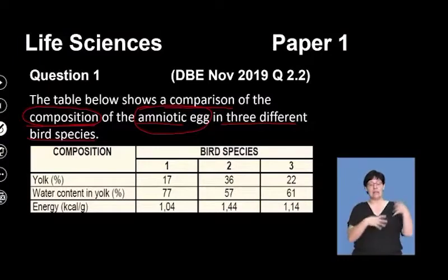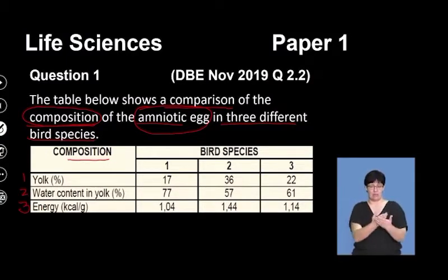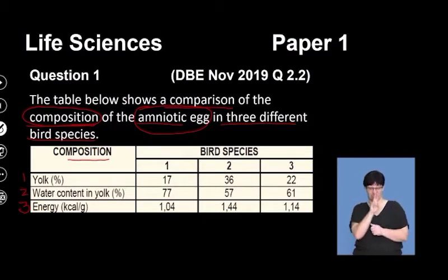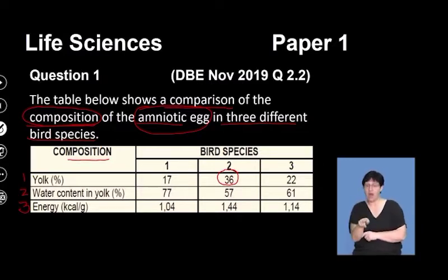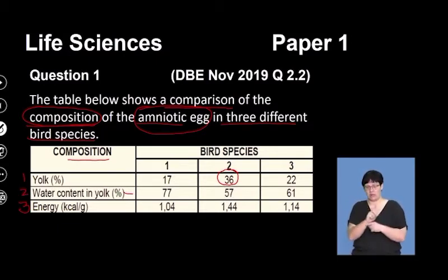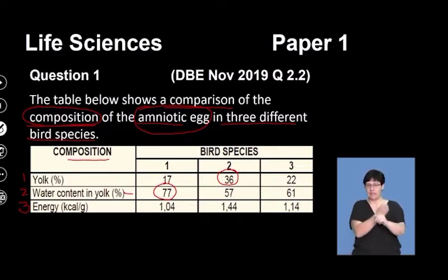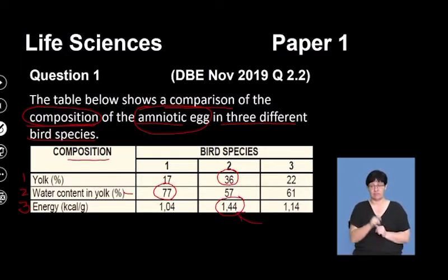The table shows the composition of: one, the yolk; two, the water content; and three, the energy available to the developing embryo inside that egg, comparing three different bird species. Bird species one has the highest yolk content — the yolk is the nutrition the developing embryo requires. The water content in bird species one is significantly higher than the others. Bird species two has the highest amount of energy available, meaning its egg has a lot of yolk to sustain the energy requirements for the developing embryo inside.